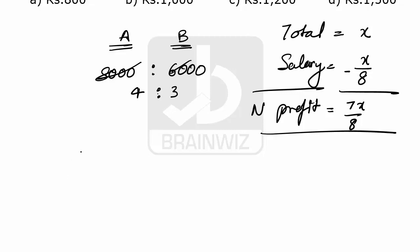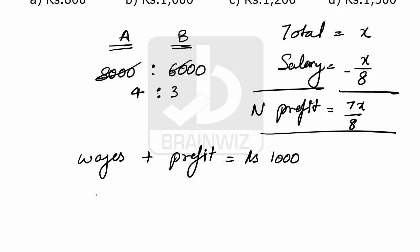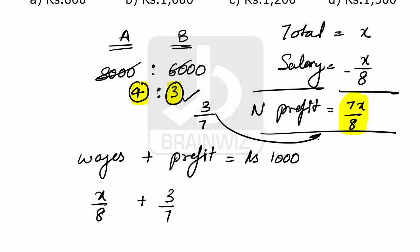Now, B has received wages as well as his own share of profit, which makes a total of rupees 1000. The wages received is X by 8, plus the profit share: from 7X by 8, B takes 3 parts out of 7 parts, which is 3 by 7 of 7X by 8.